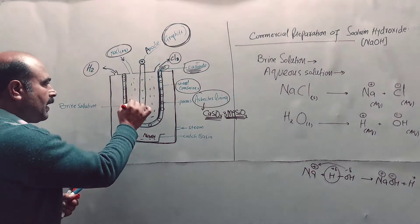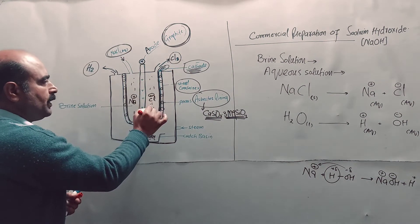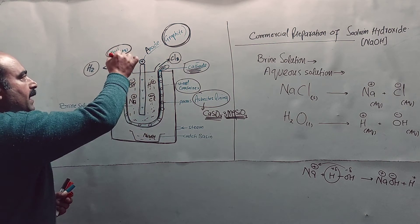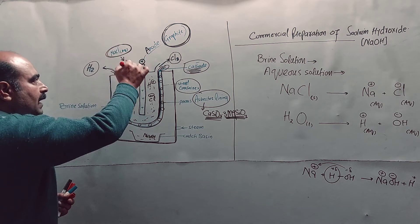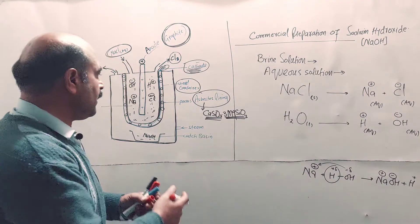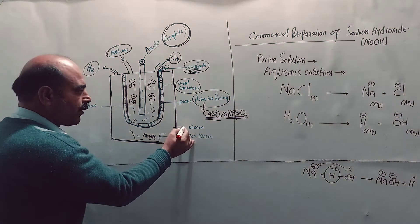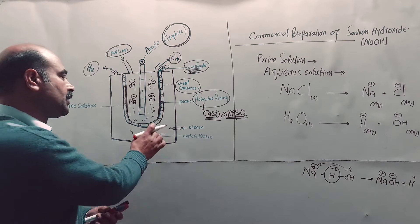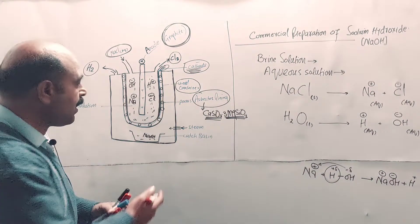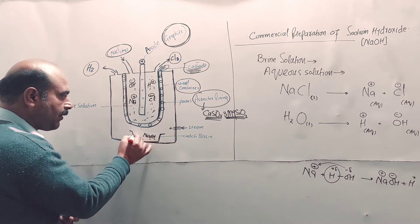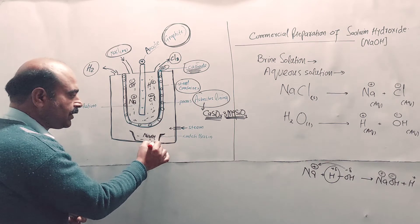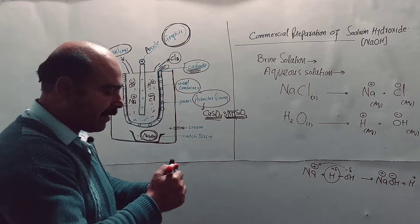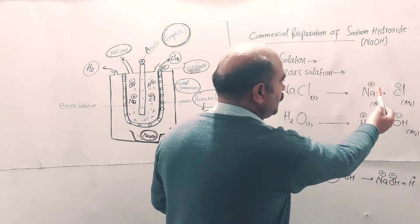The solution enters through the inlet and exits through outlets. Steam or water vapor is passed through from below. Steam contains water vapor at more than 100 degrees. Heat causes evaporation and vaporization of water. At the bottom, there's a basin or collection vessel where solid sodium hydroxide will collect after the process.